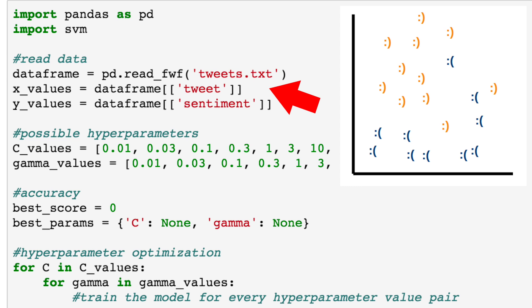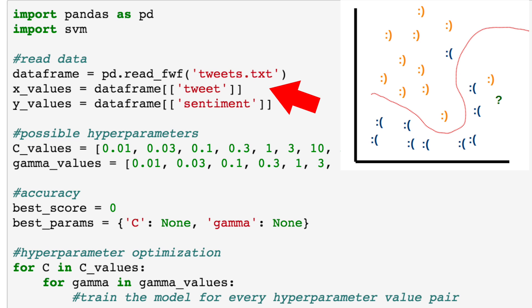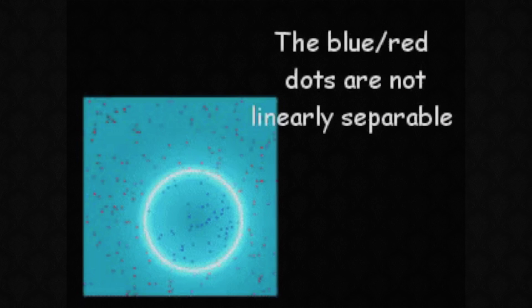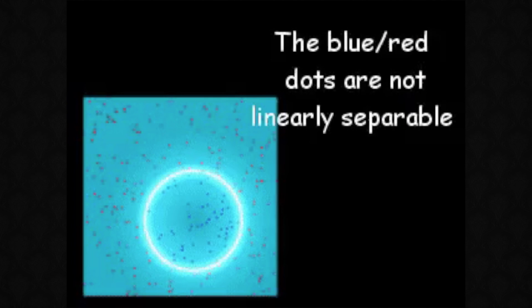If we mapped out these vectors in 2D space, we could imagine a curvy line that separates the positive tweets from the negative ones. A decision boundary. Separate, but equal. Wait, that's something else. A support vector machine can help us define this decision barrier.